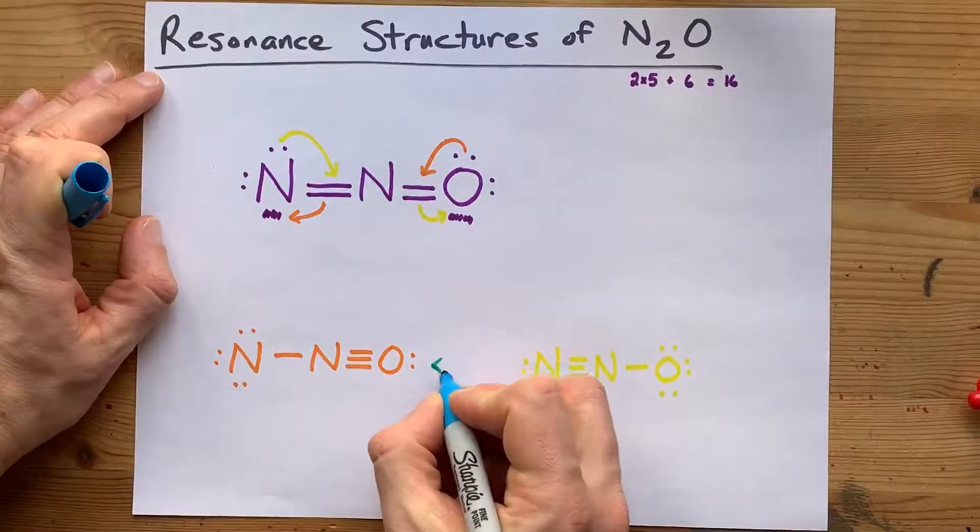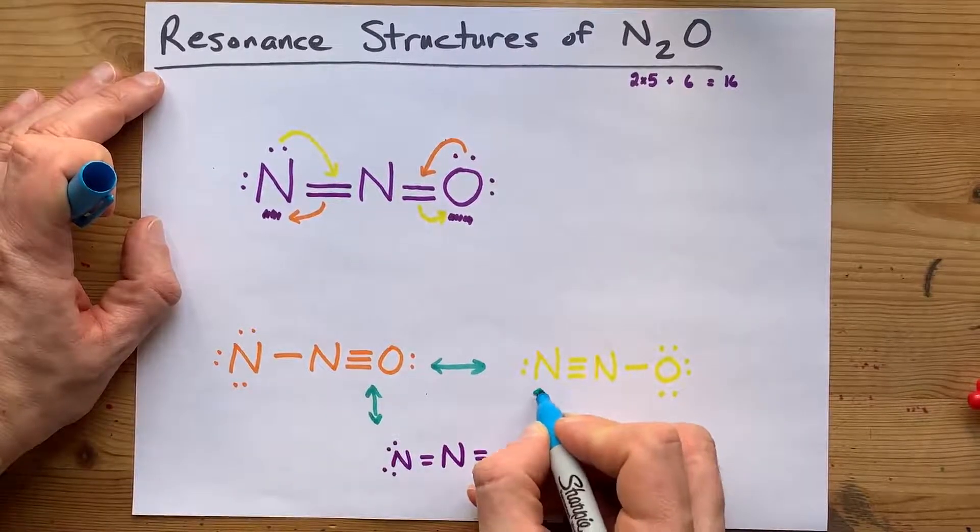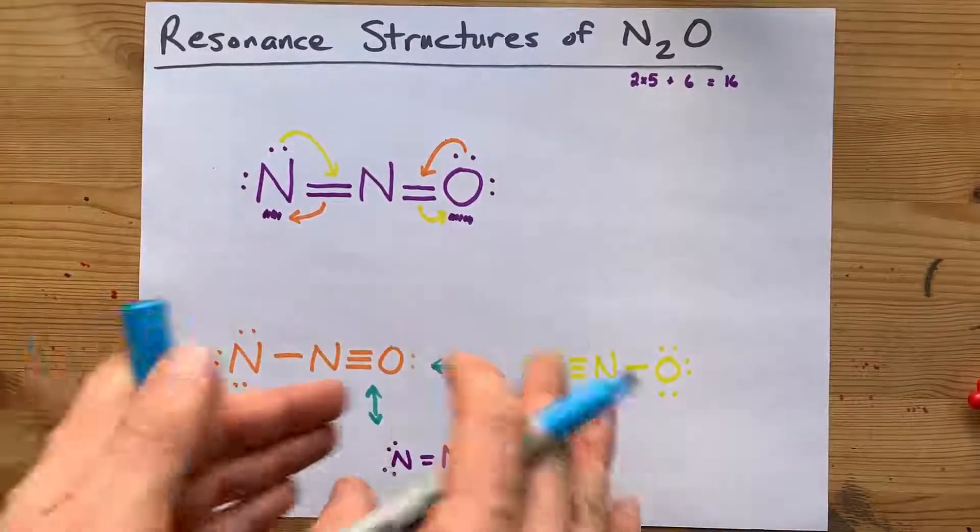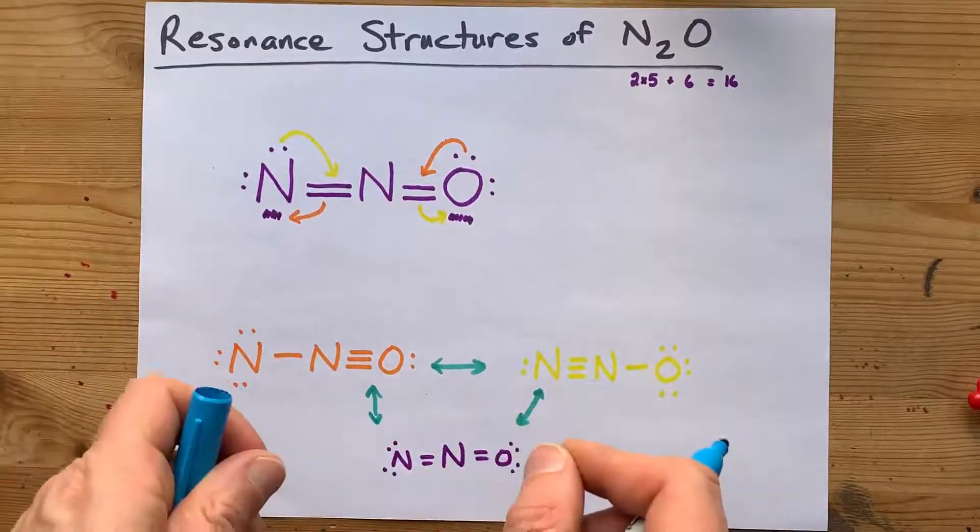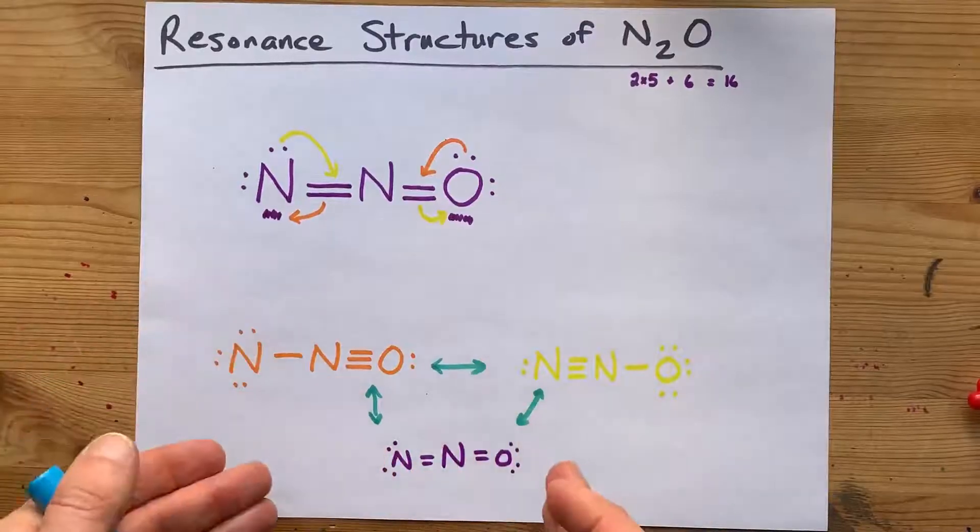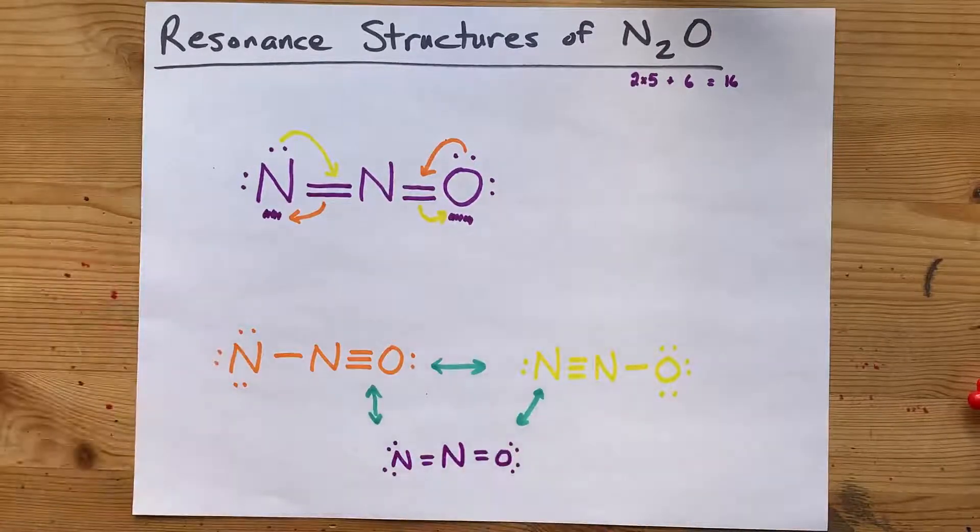To show resonance structures, we often draw these double-headed arrows. It shows that the electrons are free to move among all of these configurations. Or, more accurately, that the actual structure of this molecule is some mixture of these.